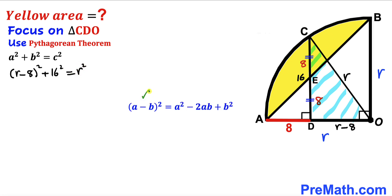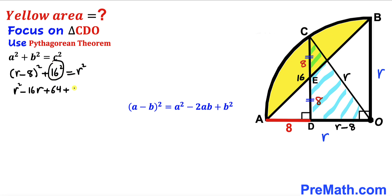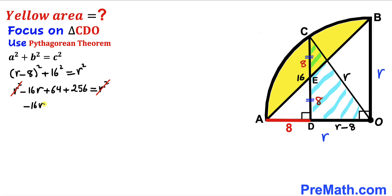Using the identity (a − b)² = a² − 2ab + b², we expand the left side: r² − 16r + 64 + 256 = r². The r² terms cancel, and combining like terms gives us −16r + 320 = 0.